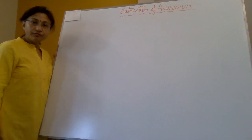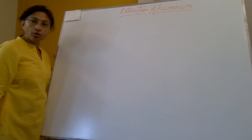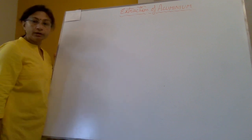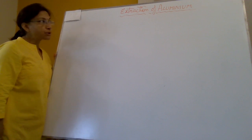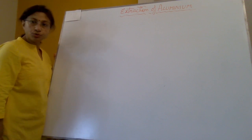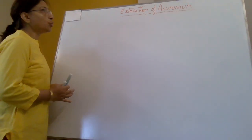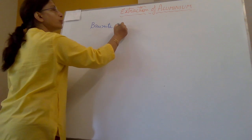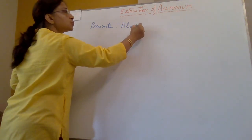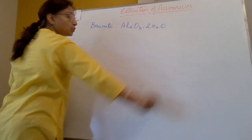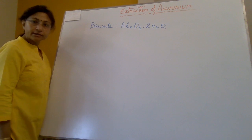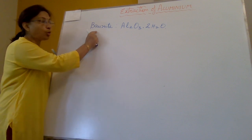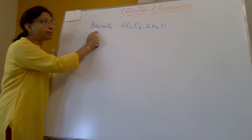Welcome. Today we will discuss the extraction of aluminium, which is a part of metallurgy. The first thing we should know is which ore has to be used for the extraction of aluminium. The main ore of aluminium is bauxite and the formula for bauxite is Al2O3·2H2O. Please remember the main ore is bauxite.